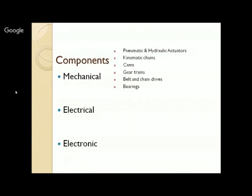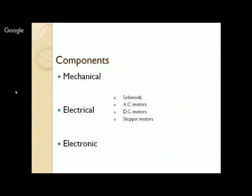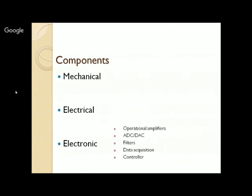Purely mechanical components may include pneumatic and hydraulic actuators, kinematic chains, cams, gear trains, belt and chain drives, and bearings. Electrical components include solenoids for small movements — for example in fluid power control valves — as well as AC motors, DC motors, and stepper motors. Electronic components include operational amplifiers, analog-to-digital converters (ADC), digital-to-analog converters (DAC), filters, data acquisition systems, and controllers.